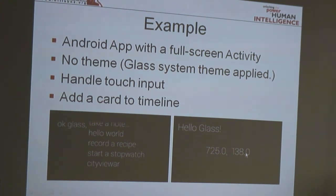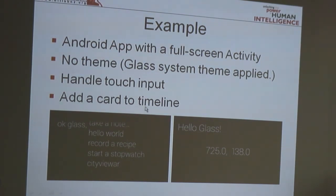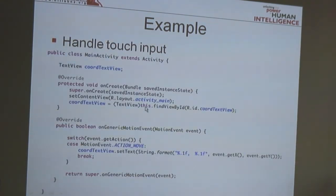This is how the Hello Glass application looks. It has a small text up here, and this will print out the coordinate where the user is touching on the touchpad. One more small thing we will do is add a card to the timeline, which is just a basic static card.